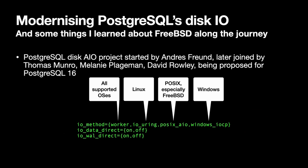The AIO project for Postgres was started by my colleague Andrus Freund. I got involved a couple of years ago, and two other colleagues, Melanie Plagemann and David Rowley, are also helping out working on different aspects of this fairly large project. The basic idea is that we want to add a setting to Postgres — IO method — that lets you choose between different native and shared implementations of a disk IO system.